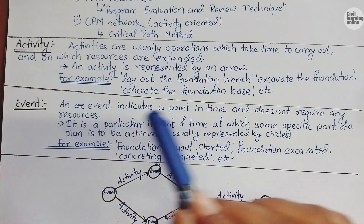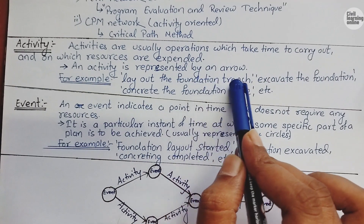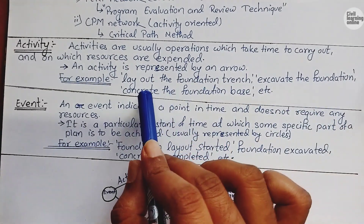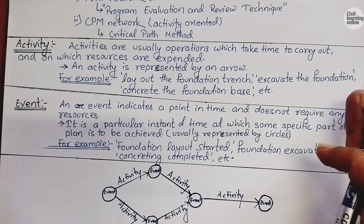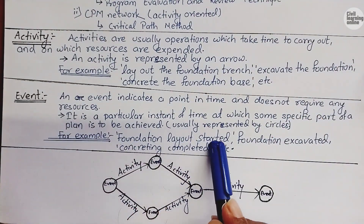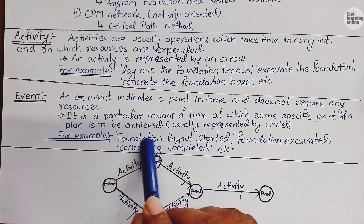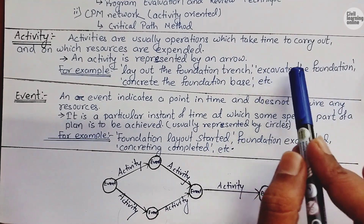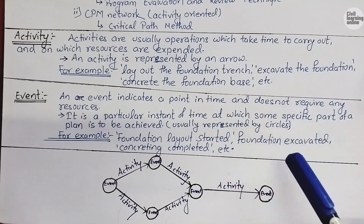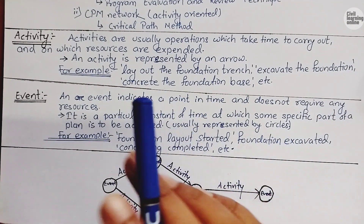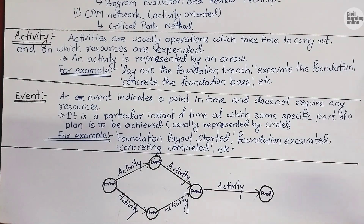For example, layout of foundation is an activity. After laying out, we excavate the foundation — that is also an activity. After excavation, we concrete the foundation base. An event is when we have completed a task — for example, 'foundation layout started' or 'foundation excavated.' When we have already completed excavation of the foundation, it is called an event because at that time we do not require any resources — no machinery or manpower — and we move toward another activity.